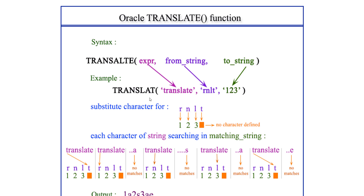Let's take this as an example. We are passing 'translate' as our input string. From this word, wherever we have 'r' we want to replace it with '1', wherever we have 'n' we want to replace it with '2', wherever we have 'l' we want to replace it with '3'. We have provided 't' in the from_string but no corresponding value in the to_string, so Oracle will skip the 't' in the output.